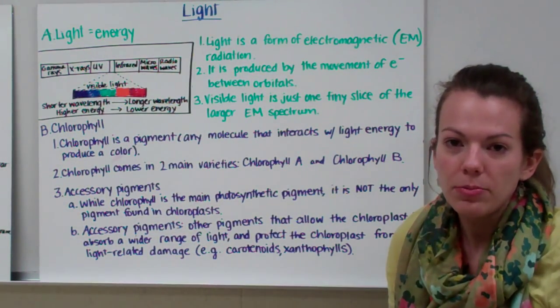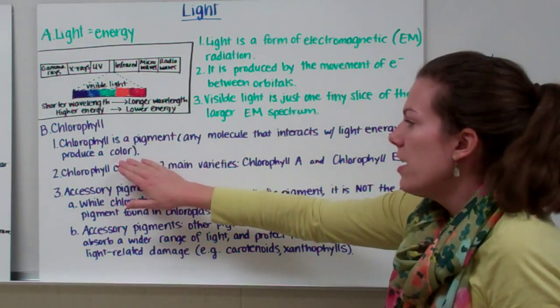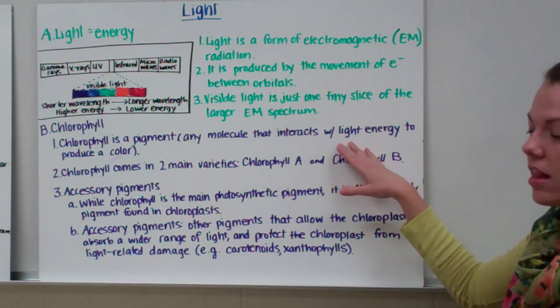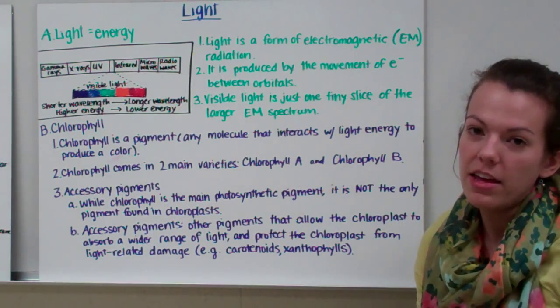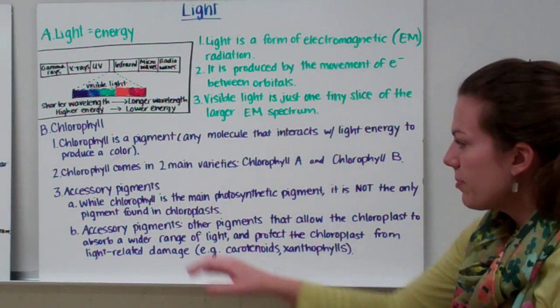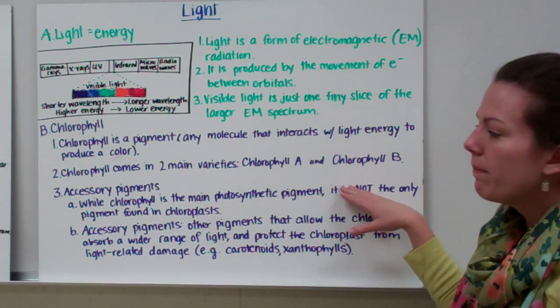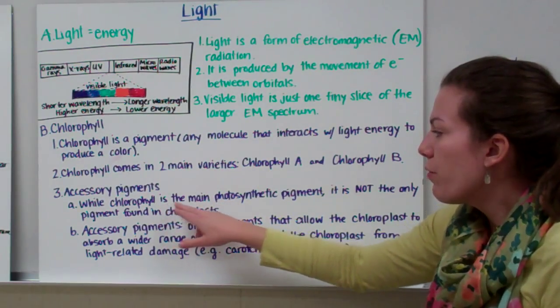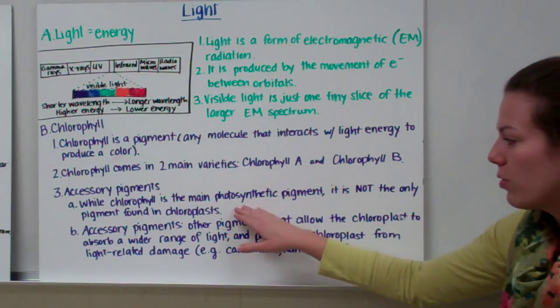Now let's look at what actually captures light inside of a chloroplast. The chlorophyll is a pigment that captures light. A pigment is any molecule that interacts with light or absorbs light to produce a color. So different pigments absorb different wavelengths of light, and the light that they don't absorb results in the color that you see. Chlorophyll comes in two main varieties: chlorophyll A and chlorophyll B. And then we have other pigments besides just chlorophyll. So chlorophyll is the main photosynthetic pigment, but it's not the only photosynthetic pigment found in chloroplast.